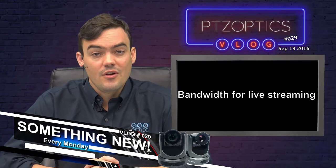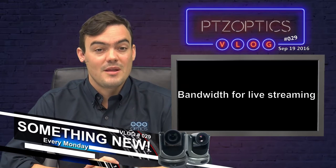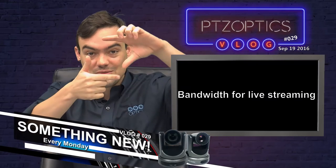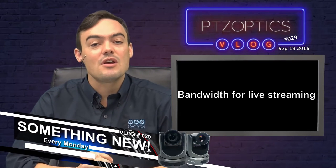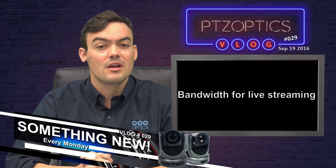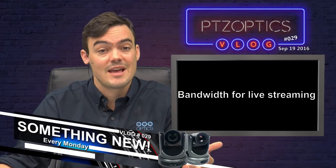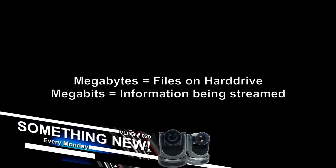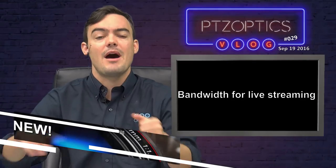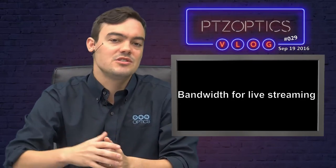Back in the days of standard definition, when you could stream in 320x240, and that was okay, even though the box was tiny, you could get away with 500 kilobits when you were encoding your stream in Flash. That was enough to get by with a 56K modem. Let's take a look at some really basic stuff before we get into it, in case you're new. Megabytes are used for file sizes stored on a hard drive. Megabits is information that's actually being streamed. So when we're talking about bandwidth for live streaming, we're talking about how many megabits per second are we streaming.